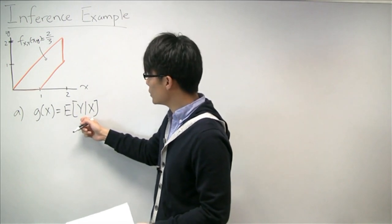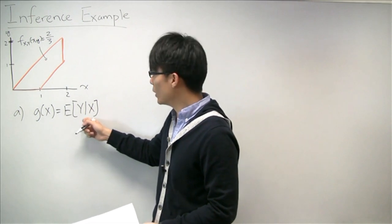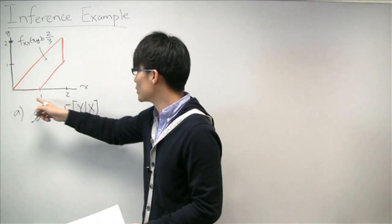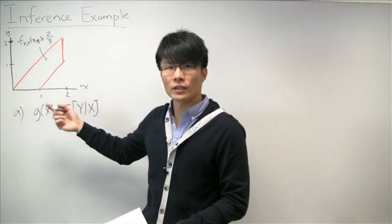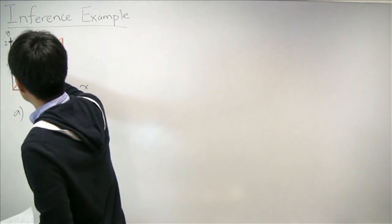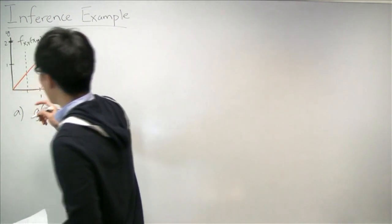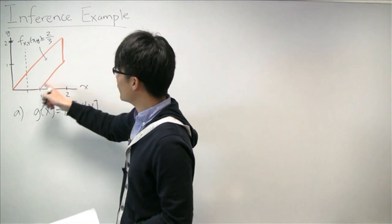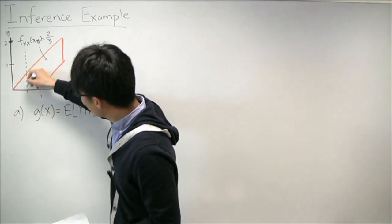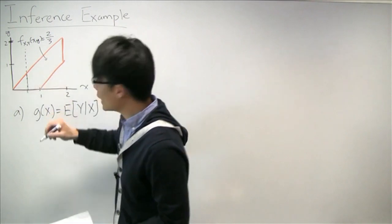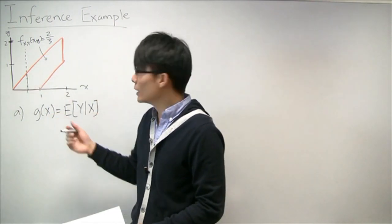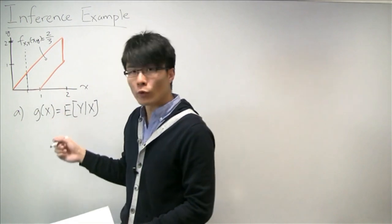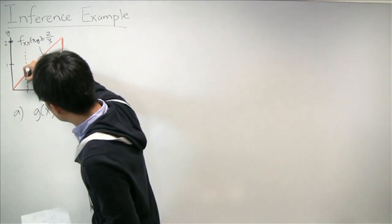What we really need to do is say, given any particular value of X, what is the conditional expectation of Y? We can just pick some values of X and see visually what that conditional expectation is. For example, if X is 1/2, and since the whole joint PDF is uniform, then the conditional slice of Y will be from here to here, and will also be uniform. So the conditional expectation will just be the midpoint.